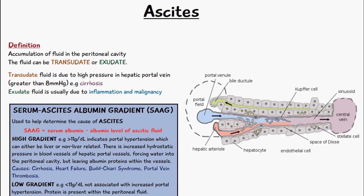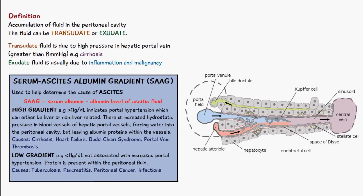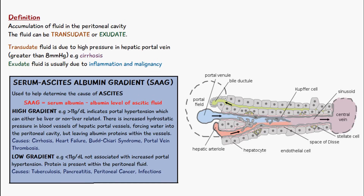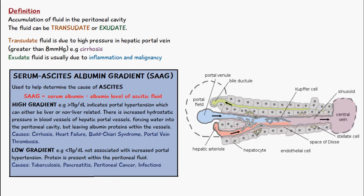We can do a test called the Serum Ascites Albumin Gradient, otherwise abbreviated to SAAG, and it's used to help determine the cause of ascites. The formula works by subtracting the albumin level of the ascitic fluid from the serum albumin. So you take the total amount of serum albumin and subtract the amount of albumin in the ascitic fluid, giving you this gradient.